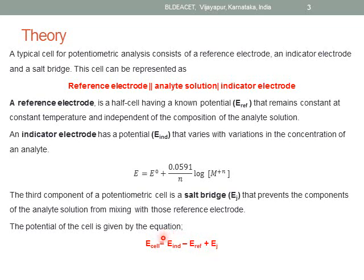The potential value of the indicator electrode changes with respect to the metal ion concentration, and as a whole the EMF value of the cell also changes. This is the theory behind potentiometric analysis.